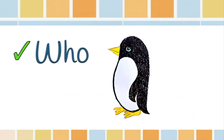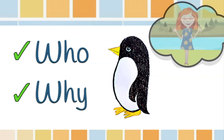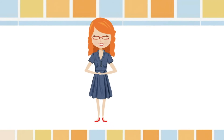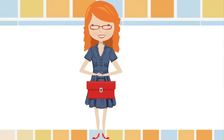I know who I am writing for. My audience is the penguin — she will be reading my factual description. I know why I'm writing. My purpose is to help the penguin understand who I am. Now it's time to get my writing toolbox out ready to build a factual description.